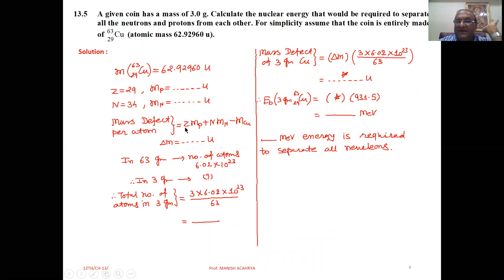So first of all, mass defect per atom is Z times Mp plus N times Mn minus M Cu. Substitute the values and calculate delta M. This is the mass defect per atom.